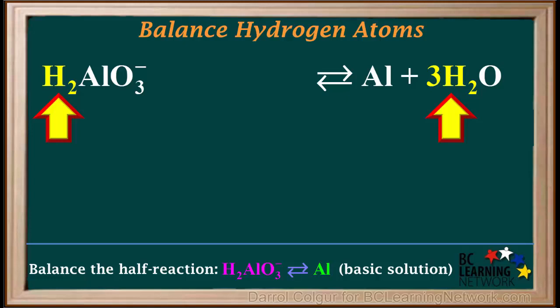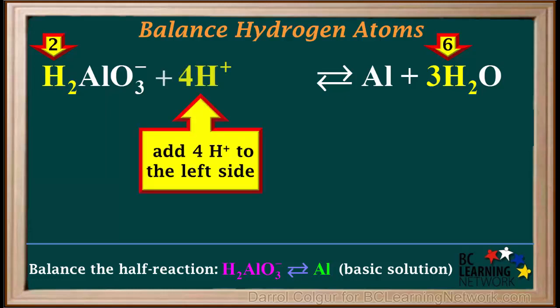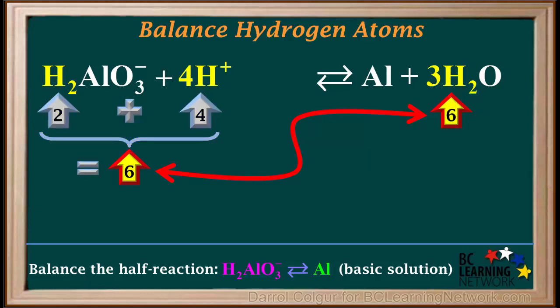The next step is to balance hydrogen atoms. At this point, we have two hydrogens on the left and six hydrogens on the right. In order to get six hydrogens on the left, we need to add four hydrogens to the left side. We do this by adding four H⁺ ions to the left side. So on the left side, we now have a total of two plus four, which equals six hydrogens. We have six hydrogens on both sides, so hydrogen is balanced.